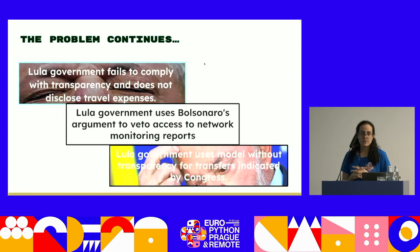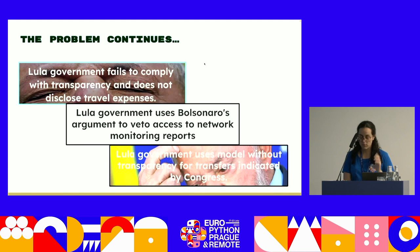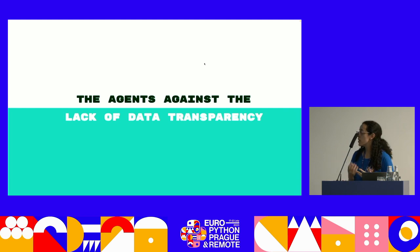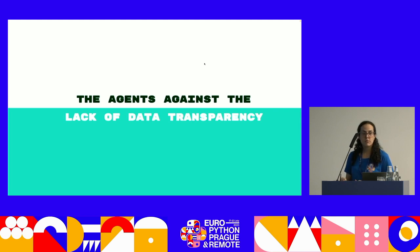But the problem continues. Even without Bolsonaro, we still have difficulties accessing information, and I think we will have this problem for many years. So what can we do as a population, or what can governments do, or what can private groups do to fight this lack of data transparency? Here we'll talk about what Rio de Janeiro's City Hall is doing to open data, and what some NGOs and private groups are doing too — just to inspire you to join a group or try something different.